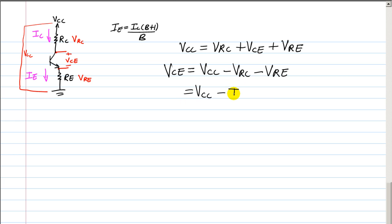VRC is nothing more than IC times RC. VRE is just IE times RE, and you can find IE using this formula.